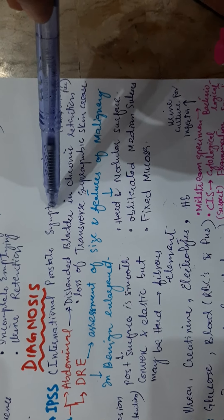After history, examination is performed, which could be abdominal, digital rectal examination, and neurological examination. In abdominal examination, distended bladder is seen on palpation or percussion if there is chronic retention of urine, and loss of transverse suprapubic skin crease is evident.